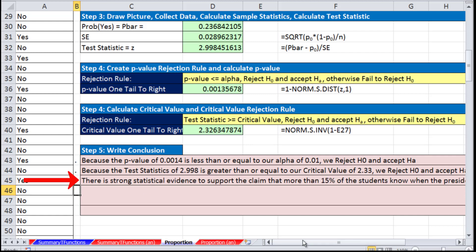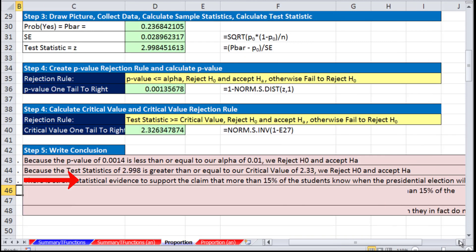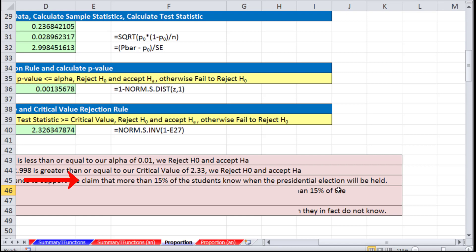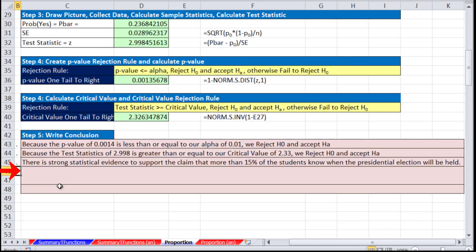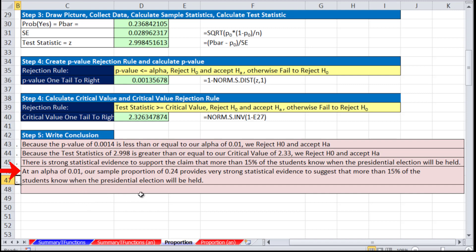There is strong statistical evidence to support the claim that more than 15% of the students know when the presidential election will be held. Said a different way, at alpha 0.01, our sample proportion of about 0.24 provides very strong statistical evidence to suggest that more than 15% of the students know when the presidential election will be held.